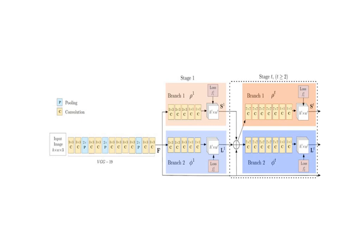The two branches predict two different things. The first branch predicts a set of 18 confidence maps, each representing a particular body part we are trying to estimate — so we get 18 different maps for the 18 different parts. The second branch gives 38 different outputs representing the degree of association, telling us which two parts can be combined to form a pair.